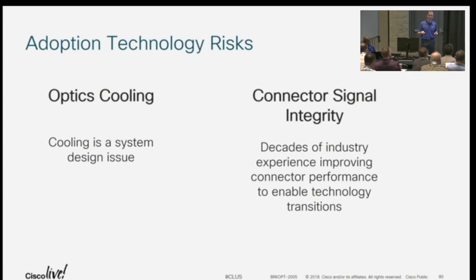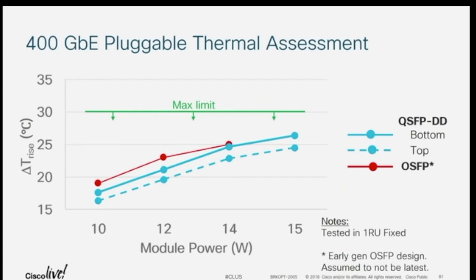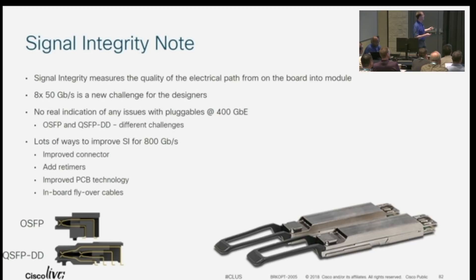Are there technology risks in doing this? Absolutely. Two years ago, this was my biggest concern — can we cool these things, and can we actually figure out how to get high speed electrical signals in and out of that connector? Both of those are not issues anymore. We don't want the optics to heat up too much because optics doesn't like getting hot. We're seeing now that we can cool up to 15 watt modules well below the limit — depending on whether you put it in a 1RU fixed chassis or a modular chassis with line cards and bigger fans. It's taken two years of frantic engineering, but we're very comfortable with that.